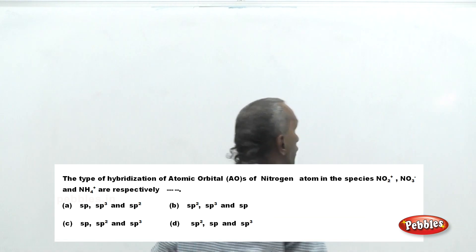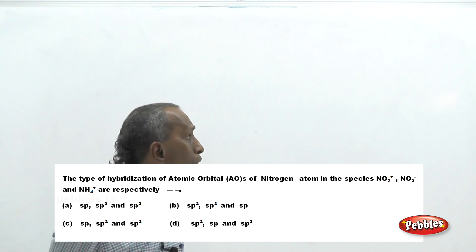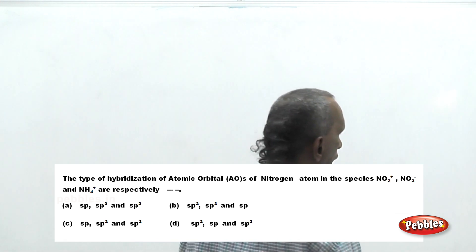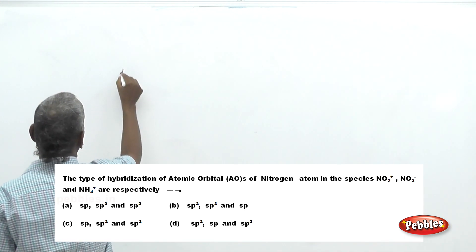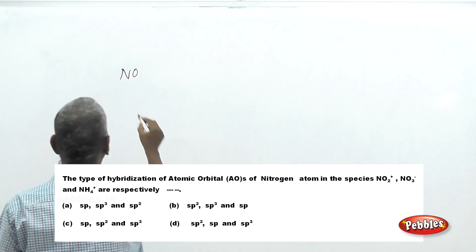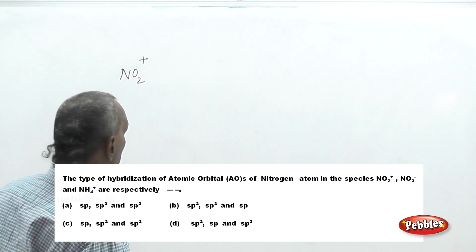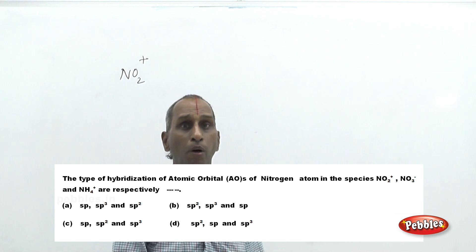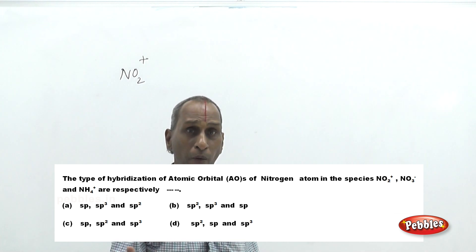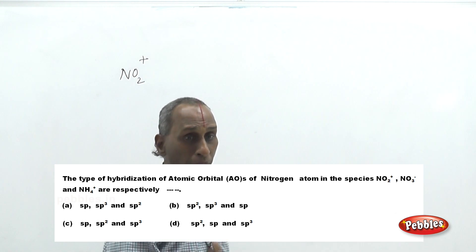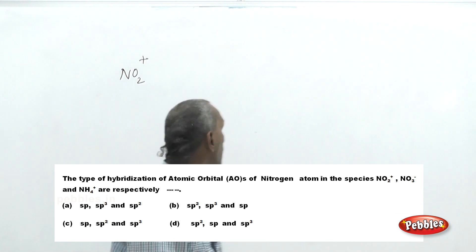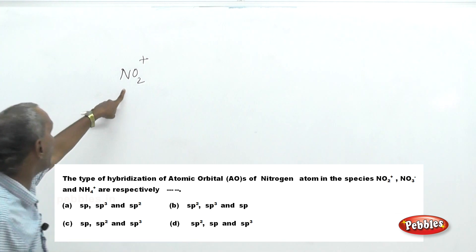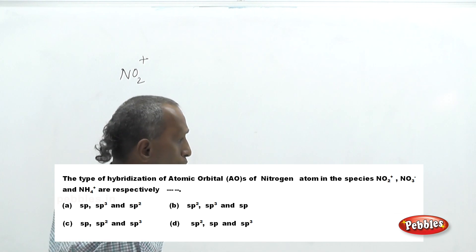The next question is based on hybridization and molecular structure. The question asks: what is the hybridization of atomic orbitals of nitrogen in the following species? Three species are given: NO₂⁺ (nitronium/nitryl cation), NO₃⁻ (nitrate anion), and NH₄⁺ (ammonium ion). Note that NO is neutral nitric oxide, while NO⁺ is nitrosyl cation (an electrophile). NO₂ is neutral nitrogen dioxide, while NO₂⁺ is the electrophile in organic chemistry.